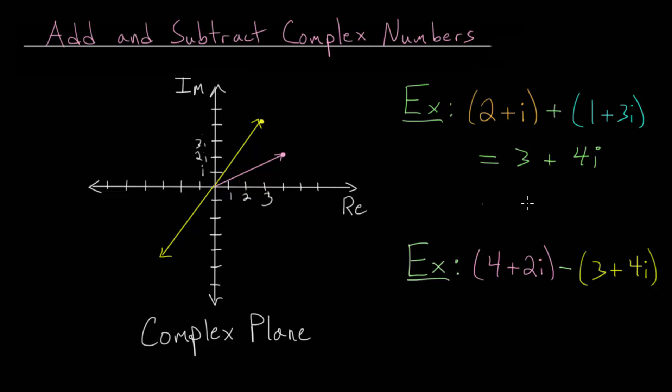And then once we have the opposite of the vector we're subtracting, we're just going to add the original vector and that opposite vector. Remember adding, we start with the original one, and we're going to slide the second one over so that the beginning of the second one is at the end of the first one. So let's draw that in very carefully.